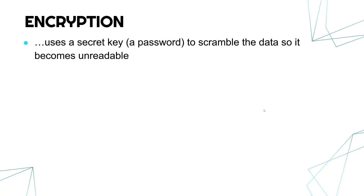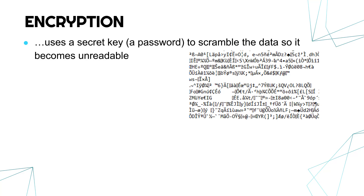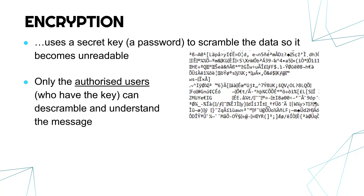A second big measure related to passwords is encryption. The way encryption works is it uses a secret key — which is effectively a password — to scramble your data so it becomes unreadable. It goes from normal text into something which, if you opened it, you would have no idea what it is. Encryption often uses quite advanced maths, which might take billions of years to break.